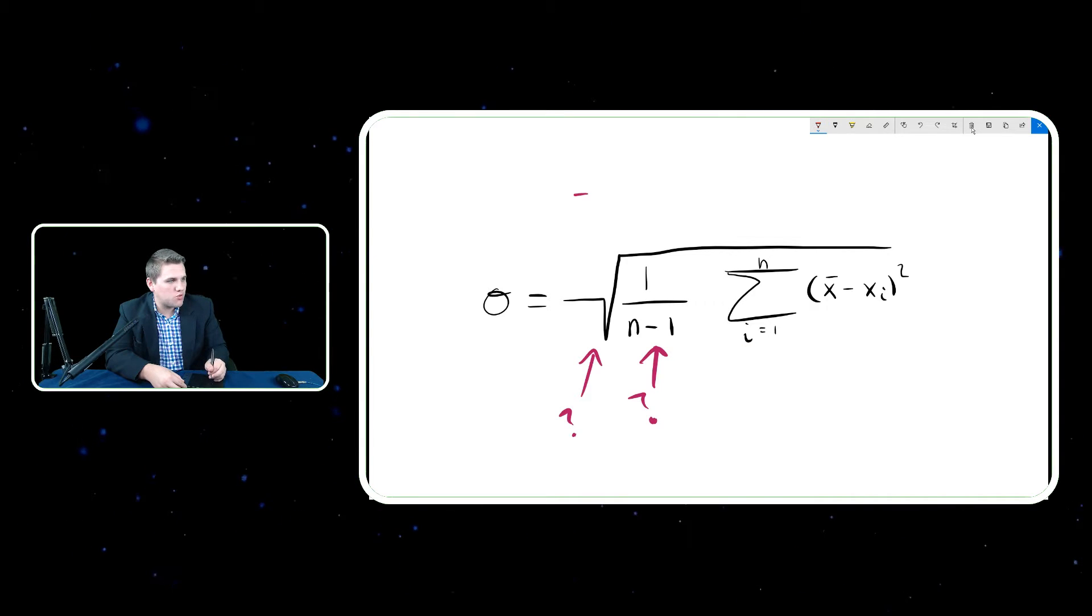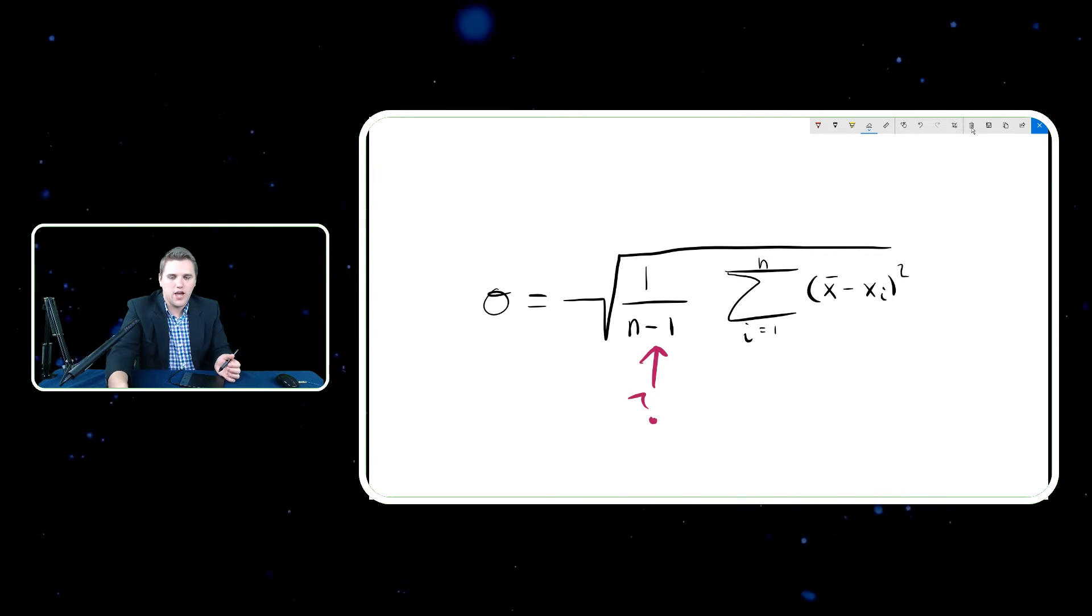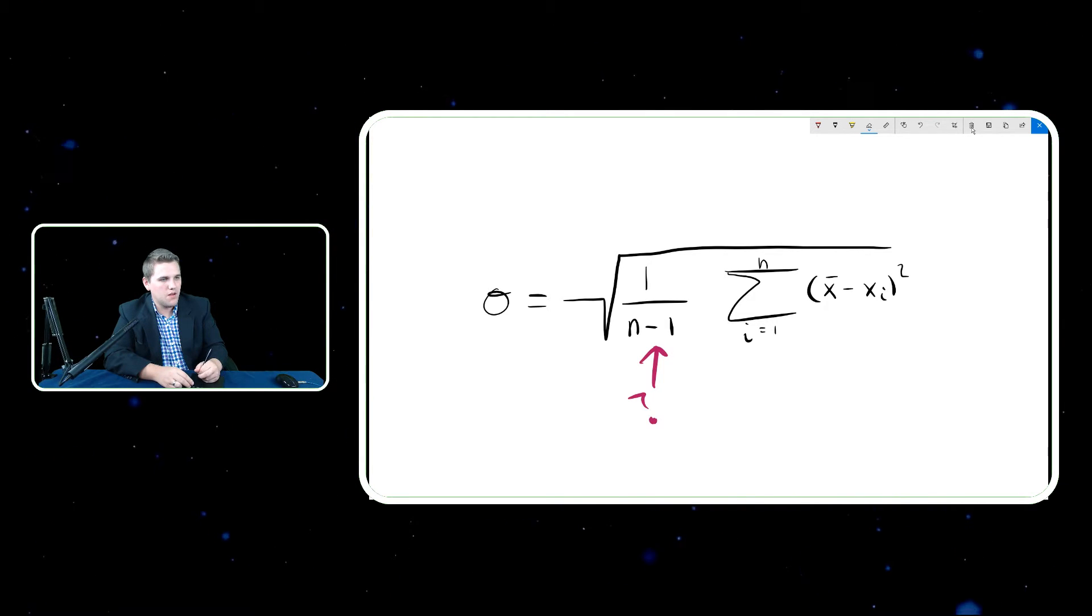But a lot of students will ask a really good follow-up question. What's this one over n minus one all about? Like, where did that come from? That's a really good question. And the answer has to do with what's called Bessel's correction. Now, what is Bessel's correction? It is a method of avoiding a certain bias.